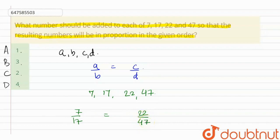If we add 1 to each number, we get 8 by 18 and 23 by 48. Clearly, this does not make a ratio.